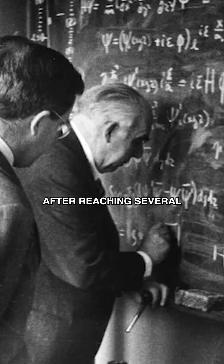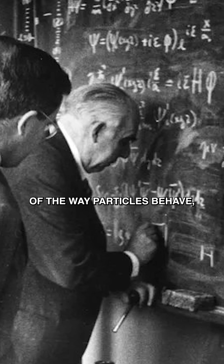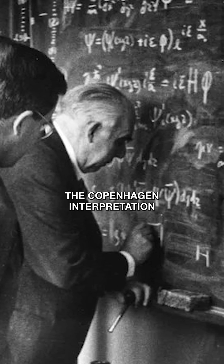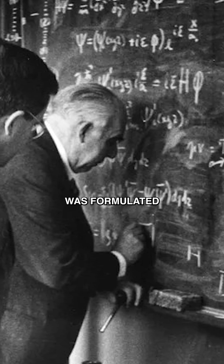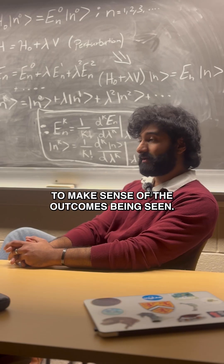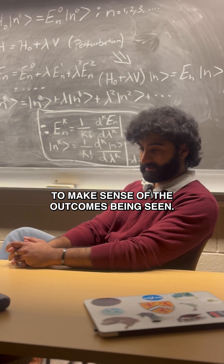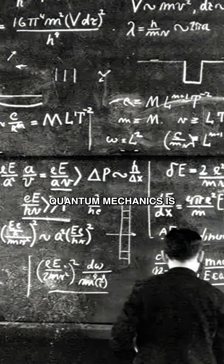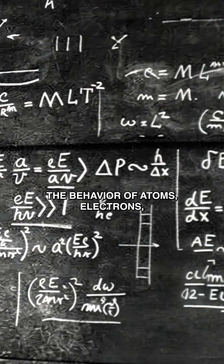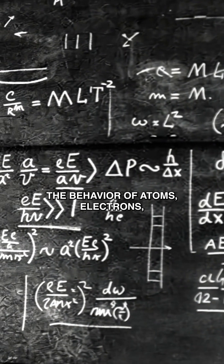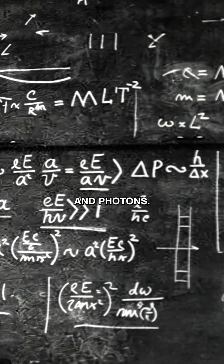After reaching several mathematical results of the way particles behave, the Copenhagen interpretation was formulated to make sense of the outcomes being seen. Quantum mechanics is a mathematical framework that describes the behavior of atoms, electrons, and photons.